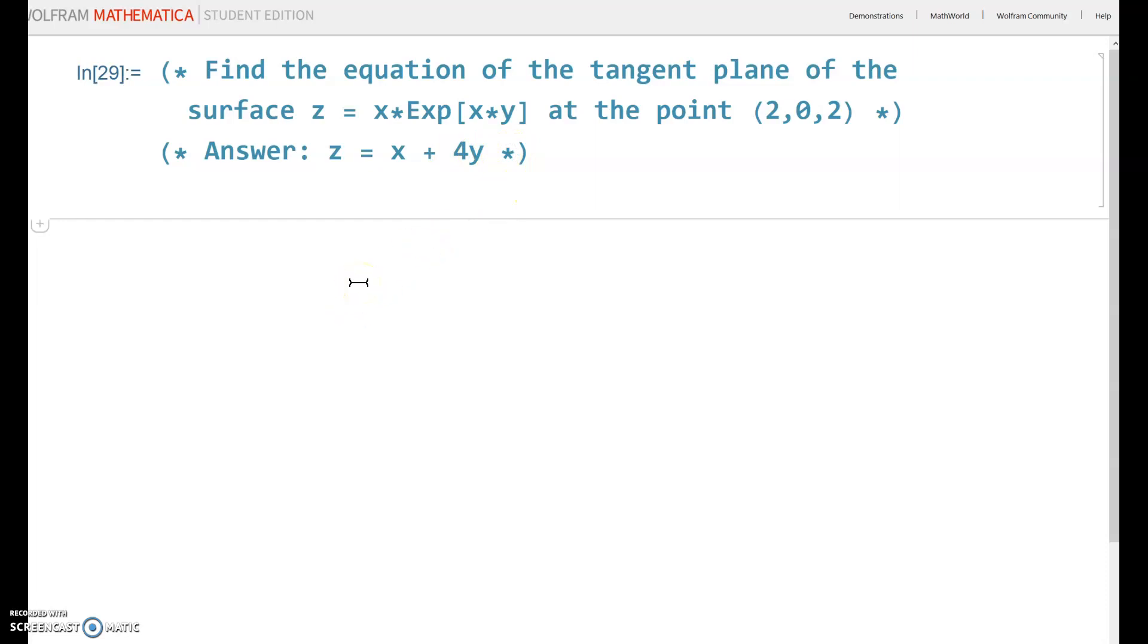So, if you want to graph two things together, you can use the Plot3D command and then curly brackets. Put both functions together in curly brackets. So, x times Exp, that's the command for e to the some power, x times y, and comma, and then the tangent plane, x plus 4y, closing curly bracket.